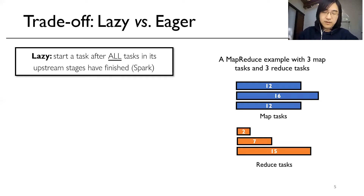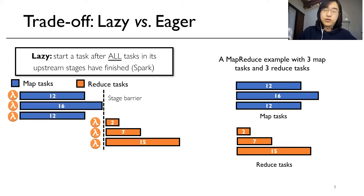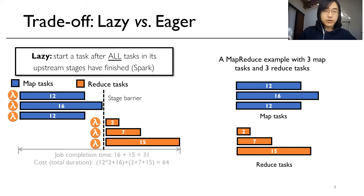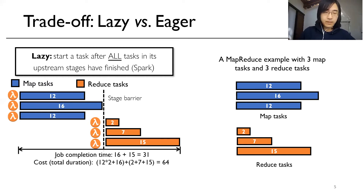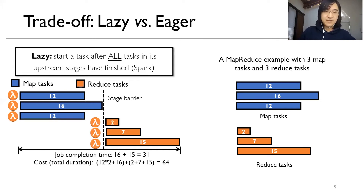As we can see, doing so will introduce a barrier between the Map and Reduce stage, which results in a job completion time of 16 plus 15 equals 31. At the same time, we will get a total cost of 64, which is the aggregated duration of all these tasks.